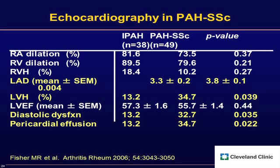Just as there's overlap with interstitial lung disease, there's often overlap with diastolic dysfunction and left heart abnormalities. Comparing idiopathic PAH patients with scleroderma patients with similar hemodynamics on echocardiogram, scleroderma patients tend to have increased left atrial size, a higher percentage of left ventricular hypertrophy, greater prevalence of diastolic dysfunction and pericardial effusion — despite very similar right heart catheterization hemodynamics. We know there is myocardial fibrosis in scleroderma, just as we see fibrosis in the skin.